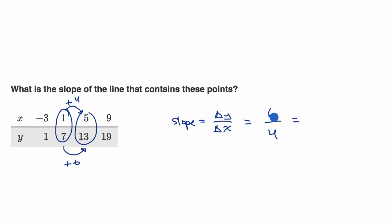So our slope is 6 fourths, and we could rewrite that if we like. Both six and four are divisible by two, so let me divide both the numerator and the denominator by two, and we get three halves, and we're done.